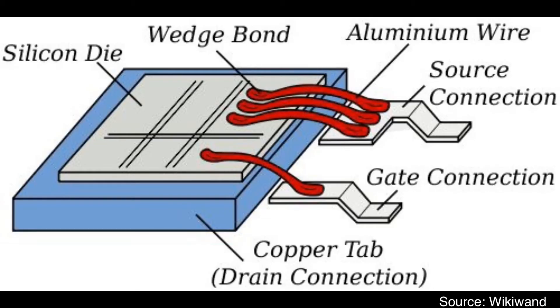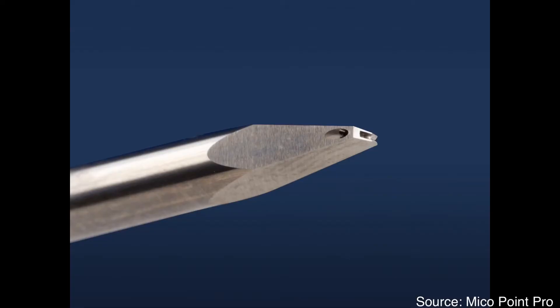Another wire bonding method is wedge bonding. It creates wedge-shaped bonds at both the die pad and substrate bond pad, so there is no ball shape bond. For this reason, it uses a wedge bonding machine and wedge bonding tool, which is different from the capillary used for ball bonding. Wedge bonding is popular for aluminum wire bonding.